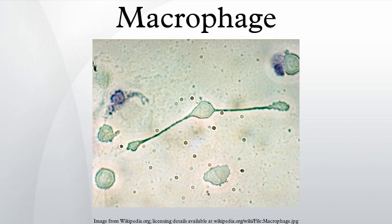Moreover, macrophages serve as a source for many pro-angiogenic factors including vascular endothelial growth factor, tumor necrosis factor alpha, granulocyte macrophage colony-stimulating factor, and IL-1 and IL-6, contributing further to tumor growth. Macrophages have been shown to infiltrate a number of tumors, and their number correlates with poor prognosis in certain cancers including cancers of the breast, cervix, bladder and brain.